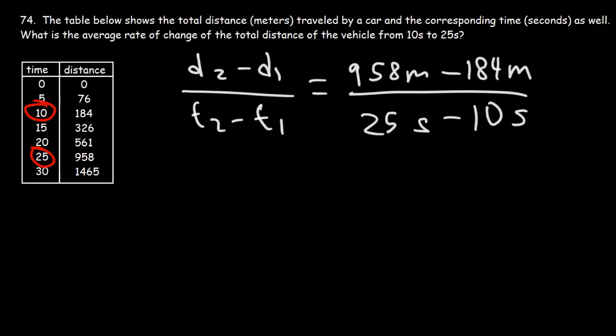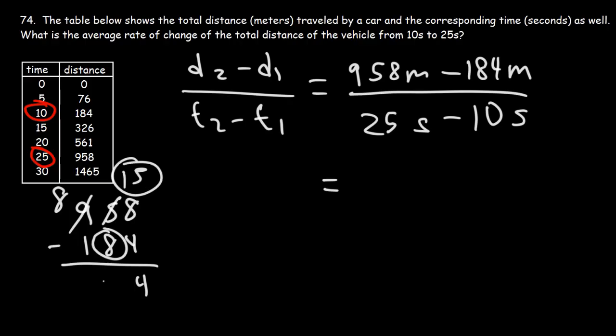958 minus 184, that's going to be 774. Now, let's say if it's not a calculator problem, here's what you can do to subtract it. So 8 minus 4 is 4. We can't do 5 minus 8 because that's going to give us a negative number, so we need to borrow a 1 from 9. Turning that to 8, 5 becomes 15. 15 minus 8 is 7, and 8 minus 1 is 7. So we get 774.